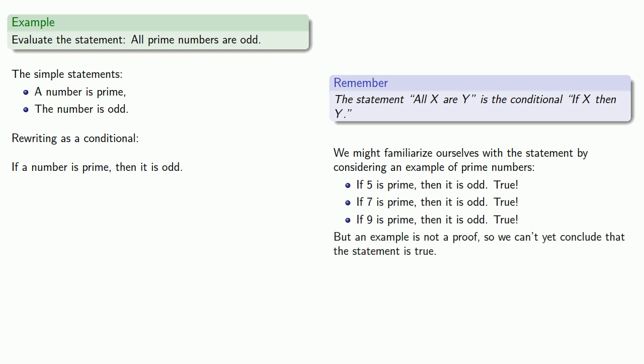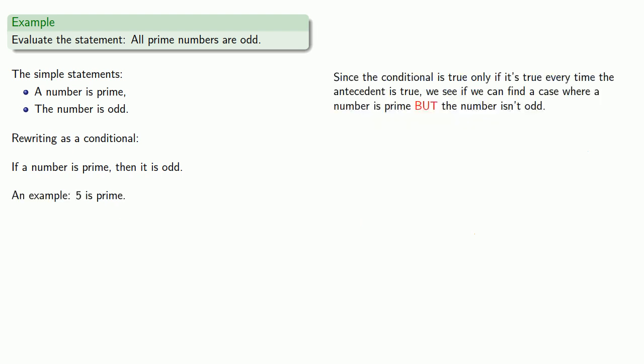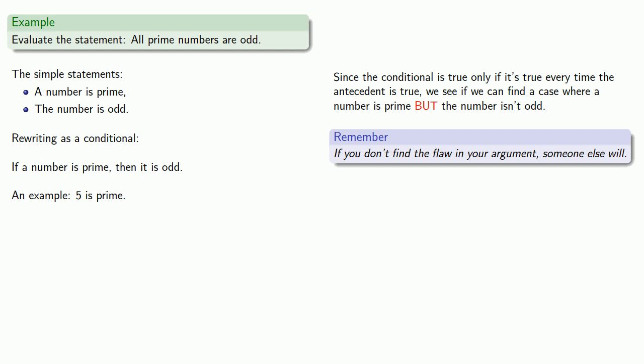An example is not a proof, so we can't yet conclude the statement is true. Since the conditional is true only if it's true every time the antecedent is true, we look for a case where a number is prime but not odd. This may be one of the most difficult things about mathematical proof — the process involves trying to tear down your own argument to find every possible flaw. This requires a degree of self-criticism that many aren't comfortable with. If you don't find the flaw in your argument, someone else will — treat it as if your worst enemy will be the one who finds it.